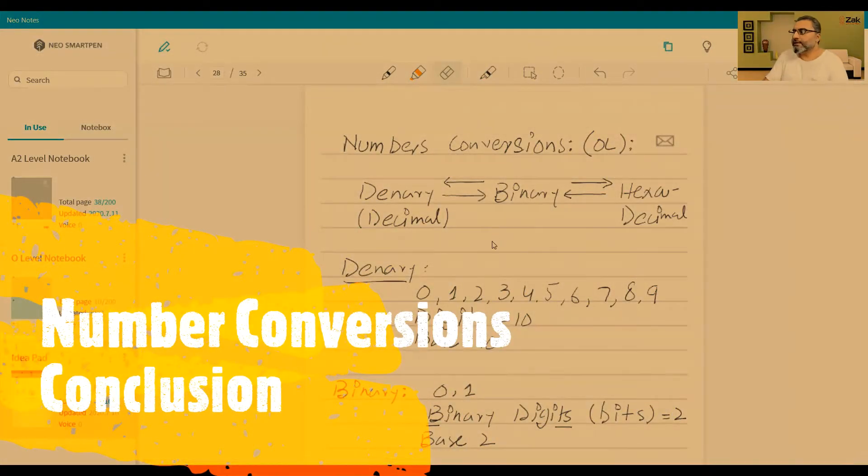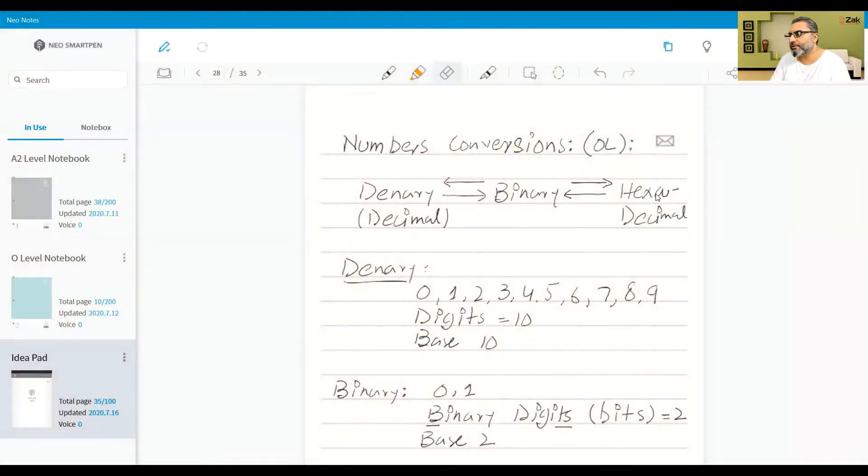So I told you that if it is denary we will convert it to binary and from binary to hexadecimal. If it is binary we can convert them to denary by having those 1, 2, 4, 8, 16, 32, 64.